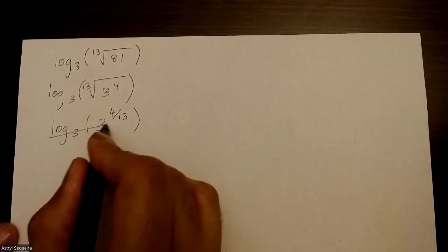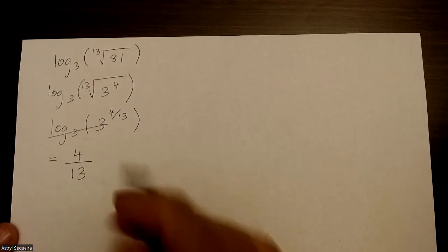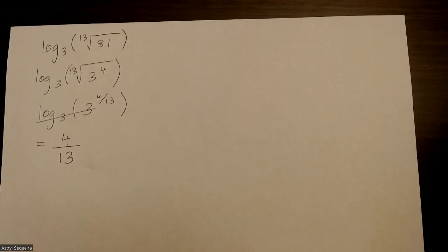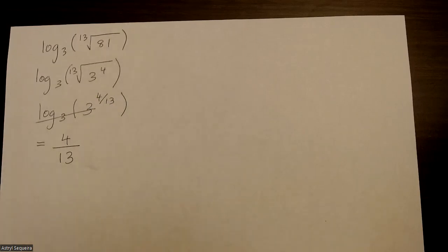And now log 3 of 3 just cancels. Your final answer is 4 over 13. So it's a pretty simple question, just converting it to exponential form and then canceling.